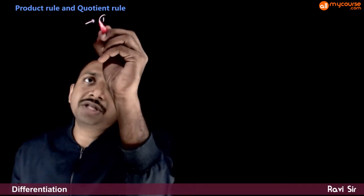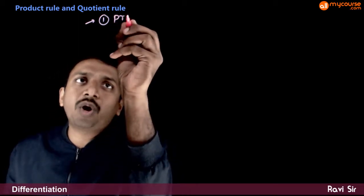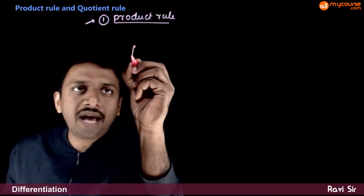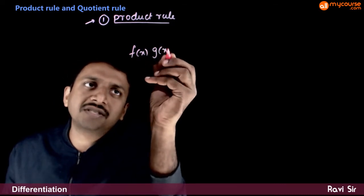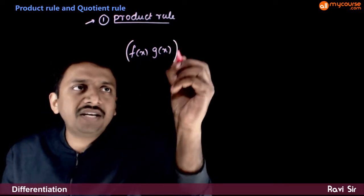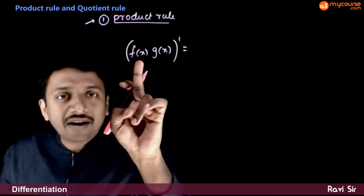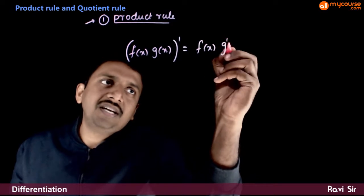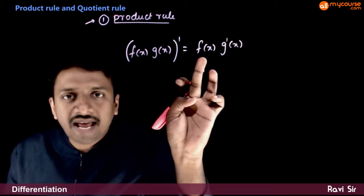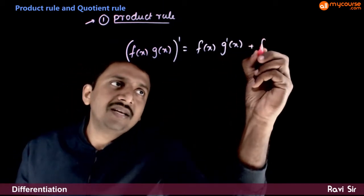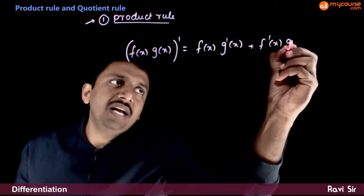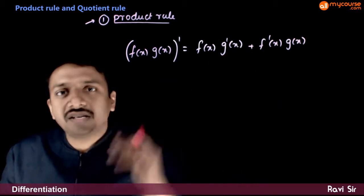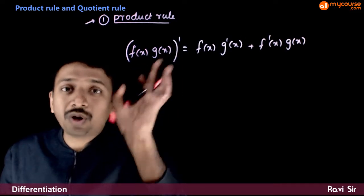The first shortcut rule is called the product rule — the product rule of differentiation. If you have a product of two functions f(x) and g(x) and you have to differentiate this product, the formula is: f(x) times the differentiation of the second function, plus the differentiation of the first function times the second function intact. That is, f(x)·g'(x) + f'(x)·g(x).